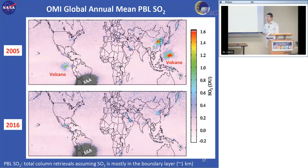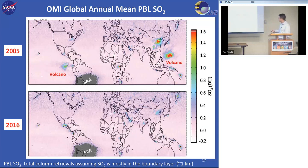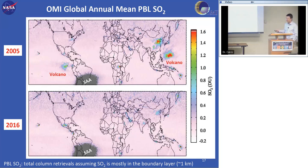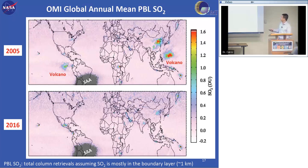With OMI's global coverage, we can look at SO2 pollution trends over different regions. Comparing annual mean boundary layer SO2 retrievals for 2005 and 2016, we see a significant reduction over eastern China and eastern US, and some increase over India. The South Atlantic Anomaly area — where our sensors are affected by high noise — is masked out.